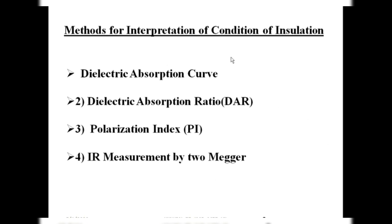The insulation condition is measured by the megger — an instrument that gives us the present value of the insulation of windings of the given electrical equipment. After measurement, there are four methods to interpret the condition of insulation: first, the dielectric absorption curve; second, the dielectric absorption ratio (DAR); third, the polarization index (PI); and fourth, IR measurement by two meggers.